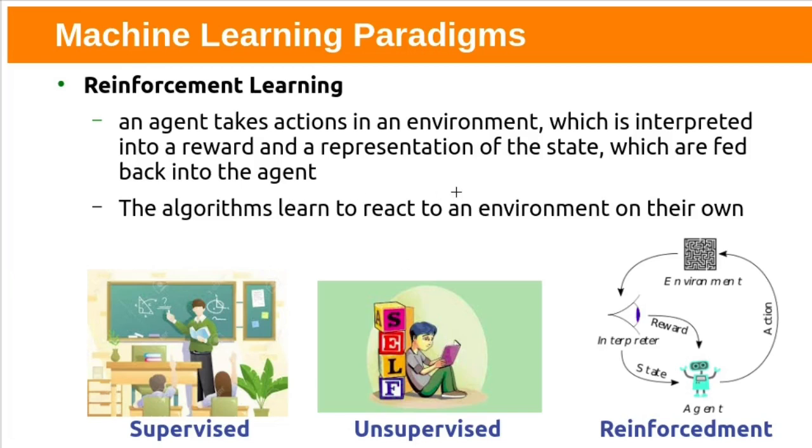Third one: reinforcement learning. The algorithm learns to react to the environment on its own. For example, if we take a robot, the robot falls while walking on a particular surface. Based on the experience, it will try to adjust before taking the next step. Falling down or successfully taking the next step is the reward. Based on that reward, it will adjust before taking the next step, whether to move slow or take small steps.